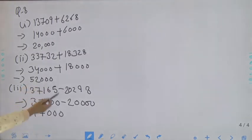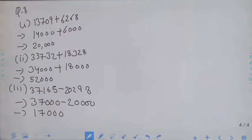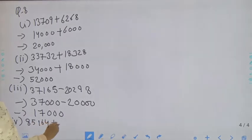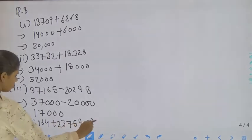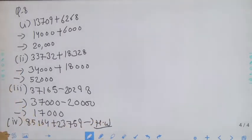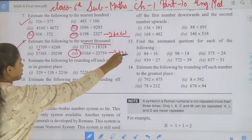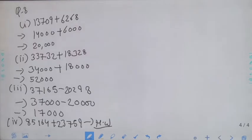We rounded off to 34,000 and 18,000, giving 52,000. You have to do all these parts in your maths notebook. The last part, fourth — 85,164 plus 23,759 — is your homework. You have to do it yourself. Now move to the next question, that is question number nine.